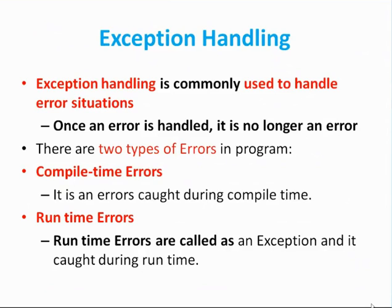There are two types of errors normally in a program. One is a compile-time error and another is a runtime error. Compile-time error is handled by the compiler — the compiler gives this error to the user and the user will resolve it. Once the user has resolved this, we move to the next phase which is running the program. When we run the program, when the code is executing, some errors are generated. These errors are called runtime errors, and they are also called exceptions. They are caught during runtime.